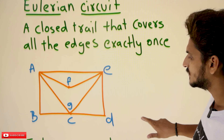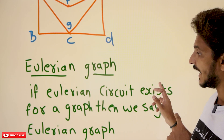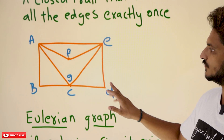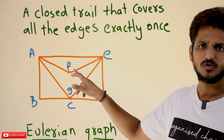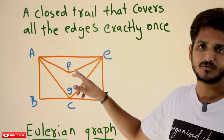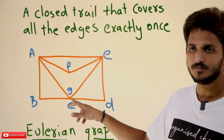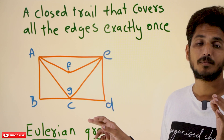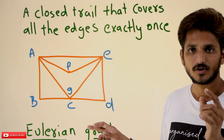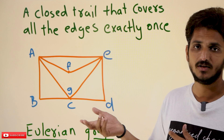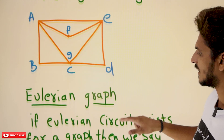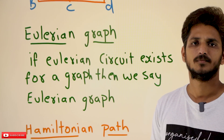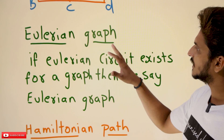Now coming to understand what is meant by Eulerian graph. If Eulerian circuit exists for a graph, then we say it is an Eulerian graph. So in this graph, you may start at F or G or D — from anywhere. If you find the Eulerian circuit, then we say this graph consists of an Eulerian circuit, and that is why we say it is an Eulerian graph. These are the basics we need to understand about Eulerian graphs.